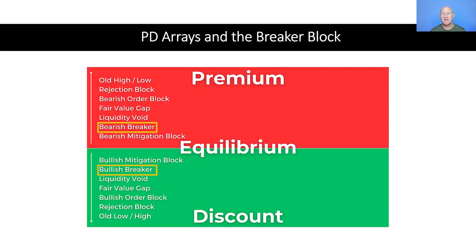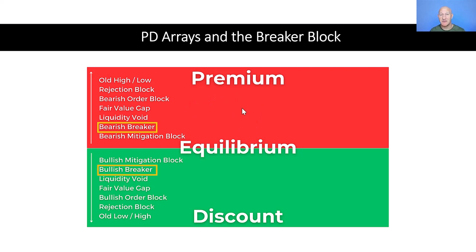So we'll start off today's video with a review of our PD array. From our PD array or dealing range, we have our equilibrium level, our premium above equilibrium, and a discount below equilibrium. Above equilibrium means we're in a premium market, so we'll be looking to go short in this area — we'll be looking for bearish setups.